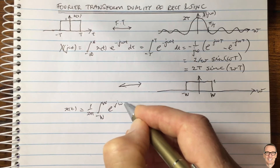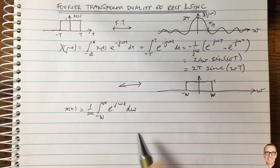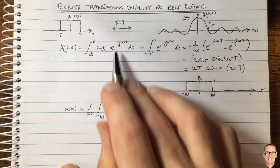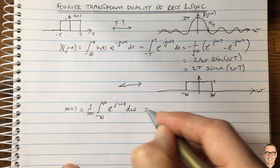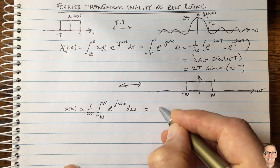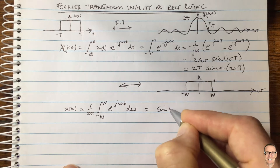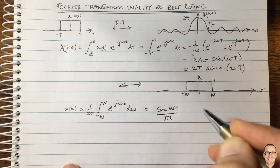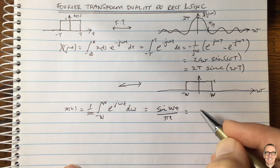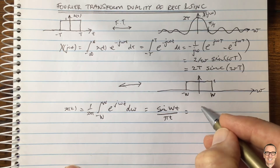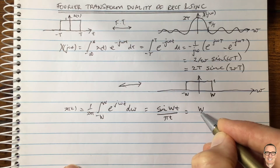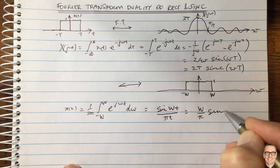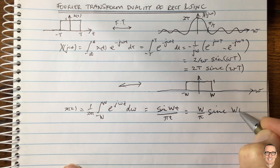The inverse Fourier transform formula gives us 1 over 2π times the integral of e to the j omega t d omega from minus W to W. Following the same working as before, this equals sine of W t divided by pi t. Multiplying top and bottom by W and expressing it in sinc form gives W divided by pi times sinc of capital W times t.